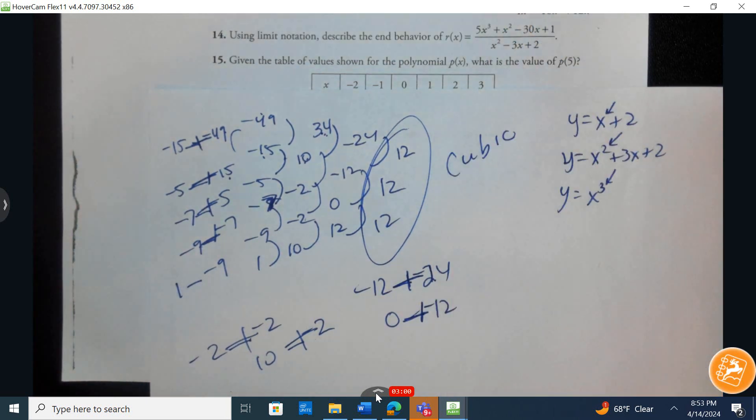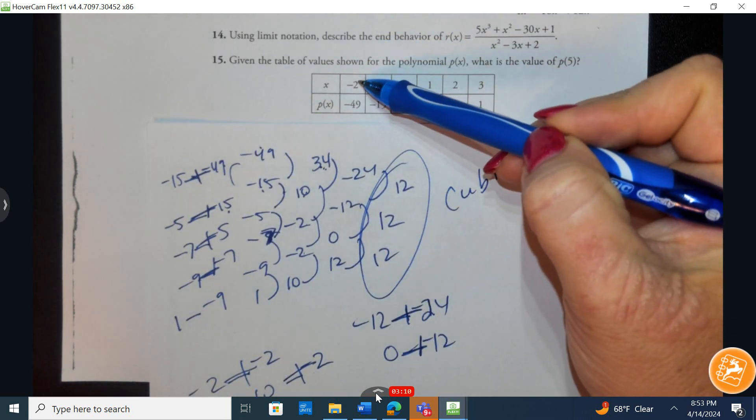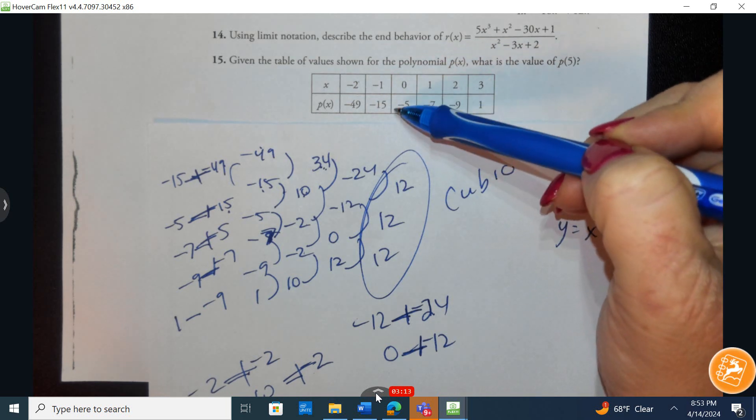Then I would take out my calculator. If you have yours at home, you can clear your calculator with second plus 712. Then you're going to go to stat, and in stat, you're going to edit and place these values in. This is in your L1 and L2.